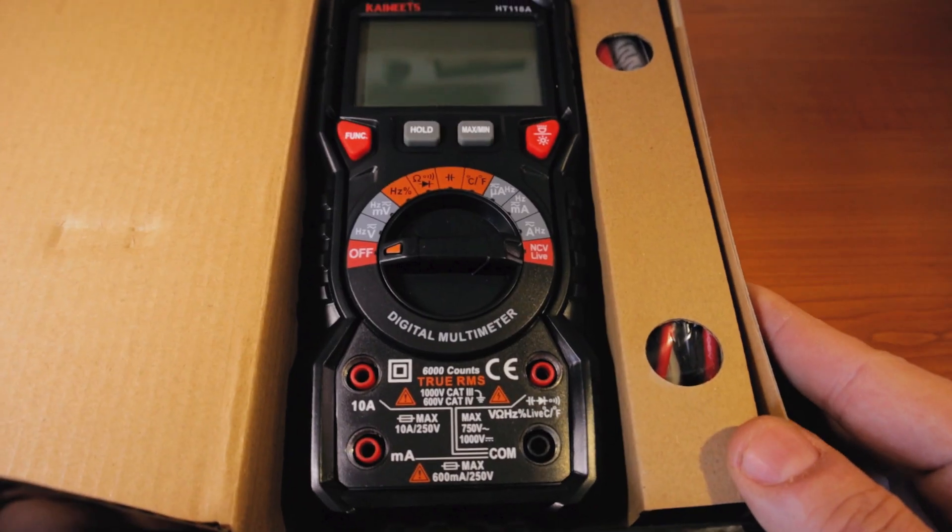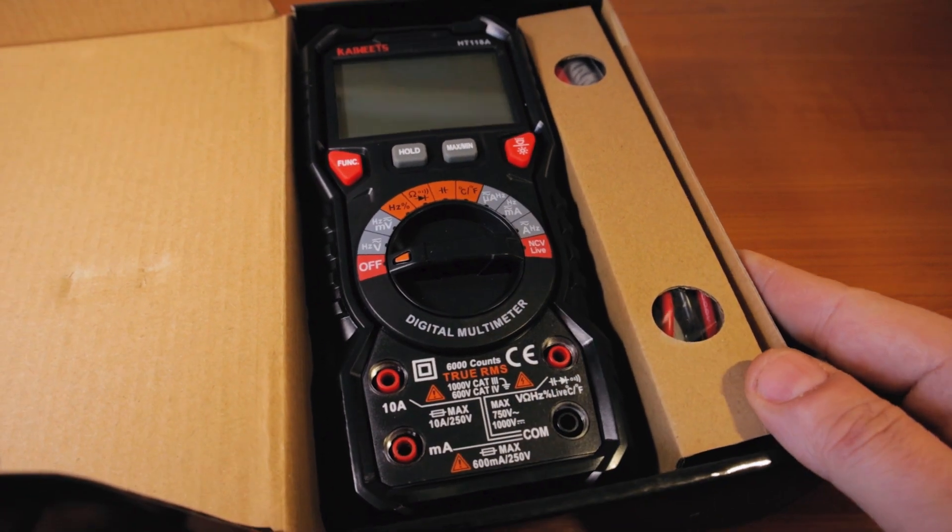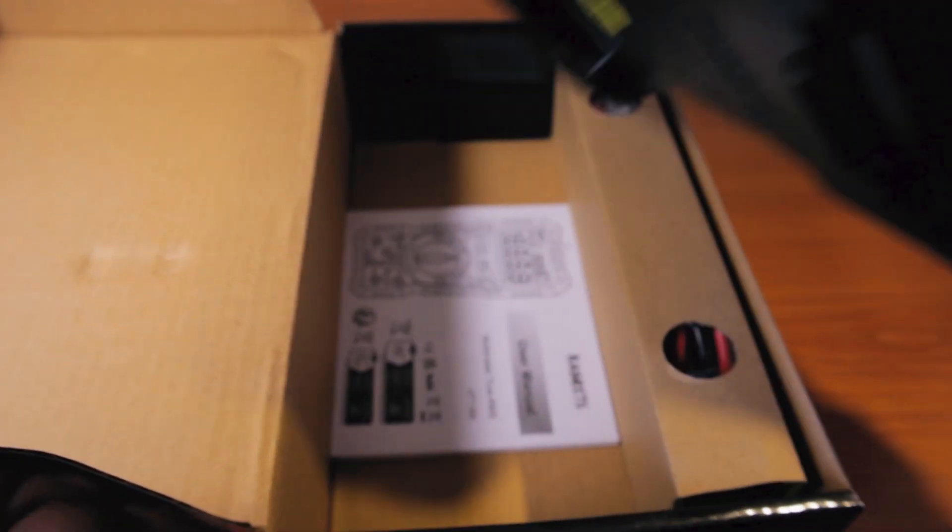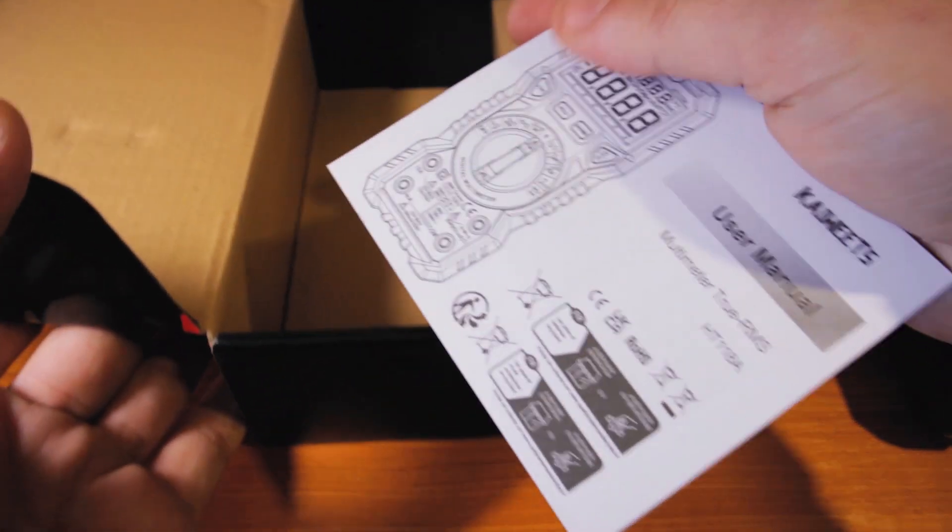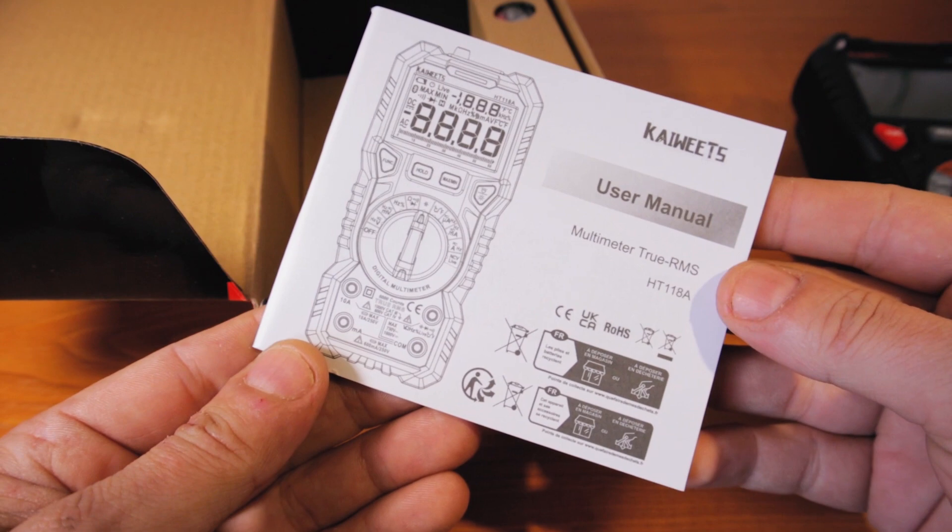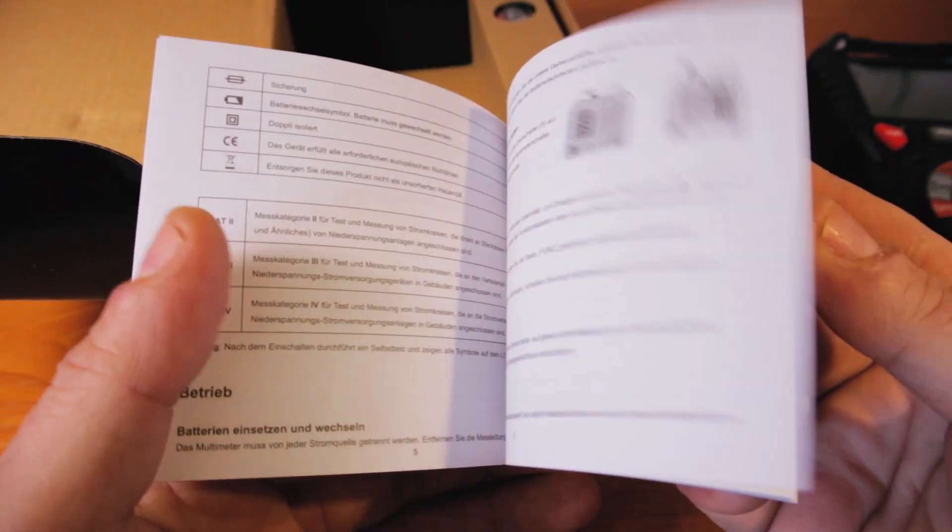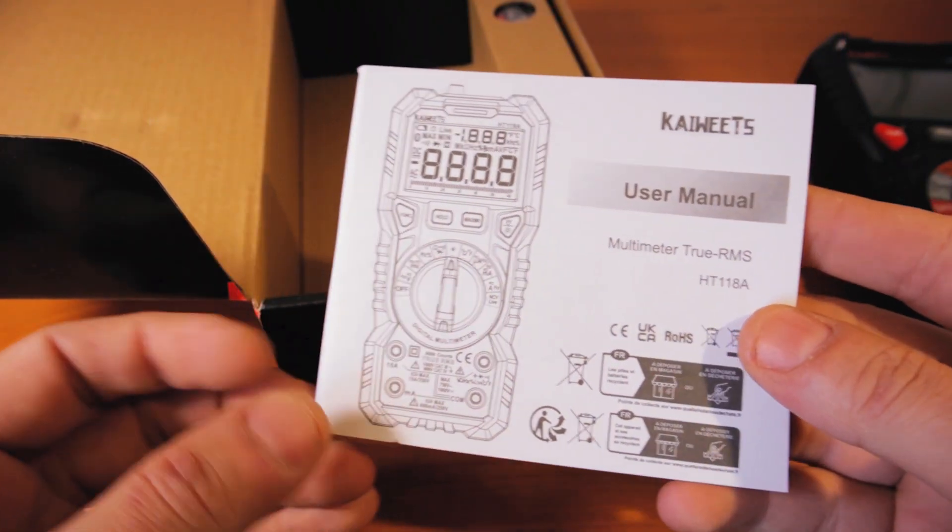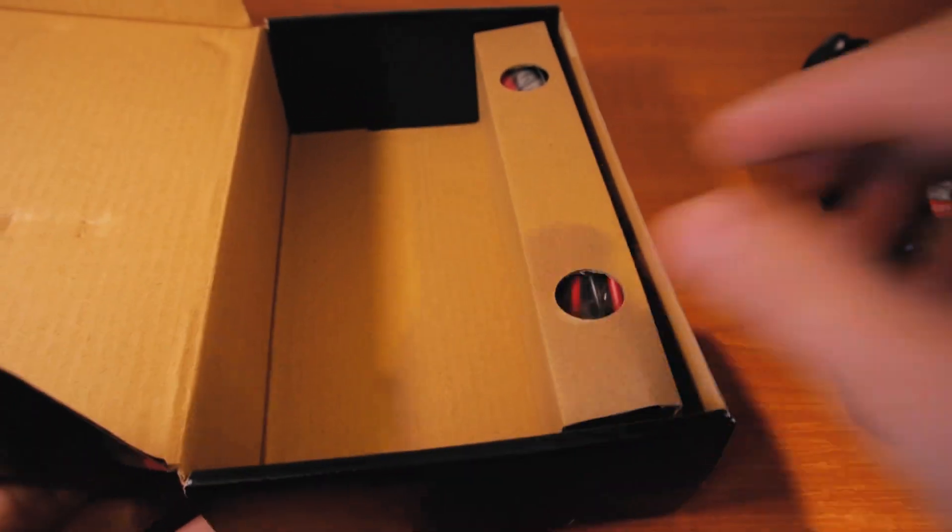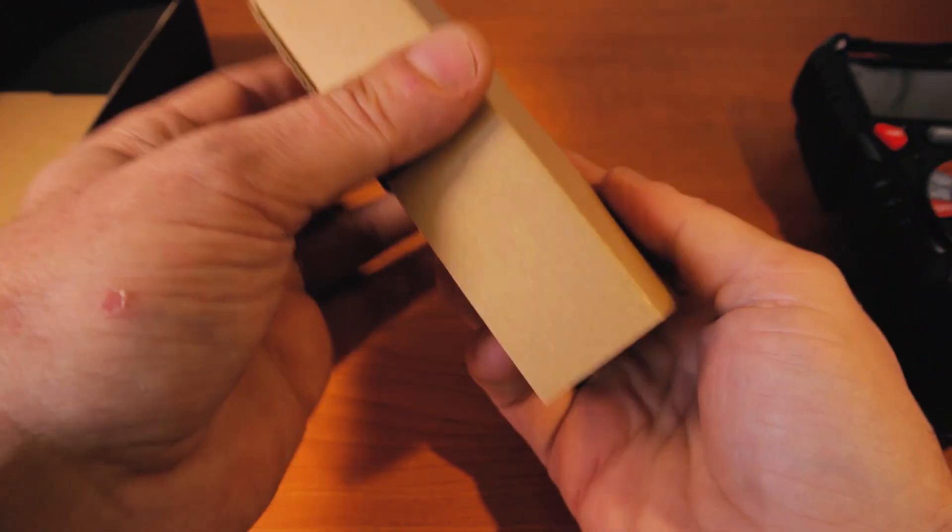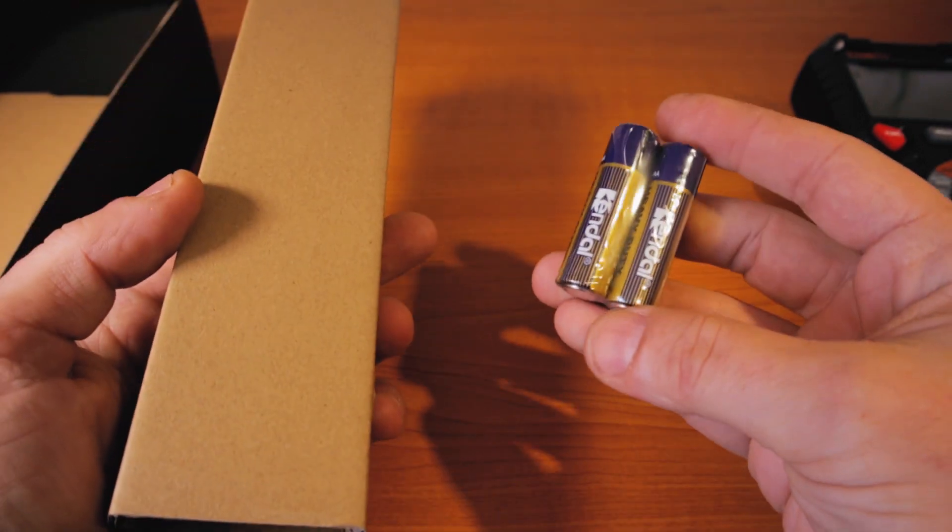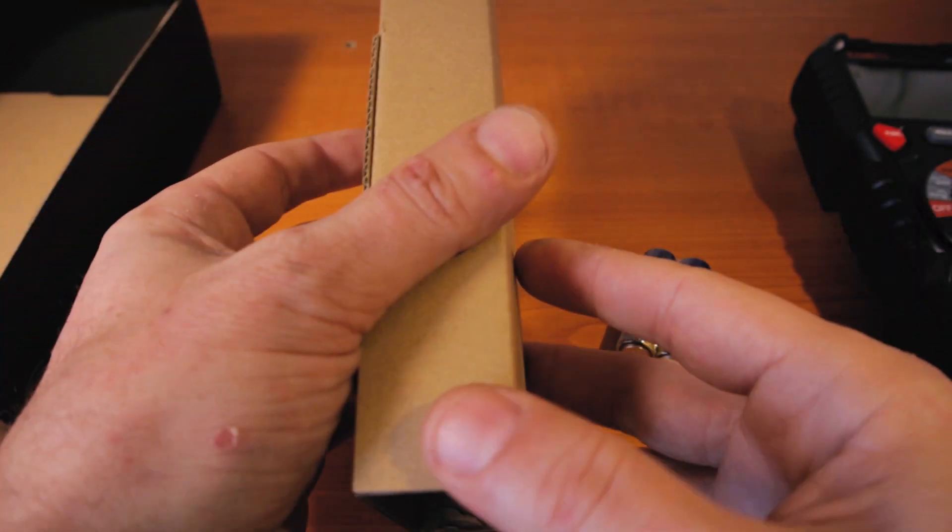So here's the package with the multimeter. I'm gonna take it out. You have the owner's manual inside which I didn't look through yet, but I have a feeling that I will, as always. In here you have some batteries for the meter.